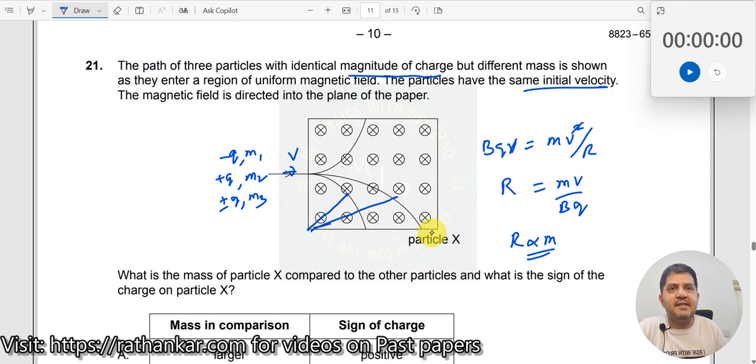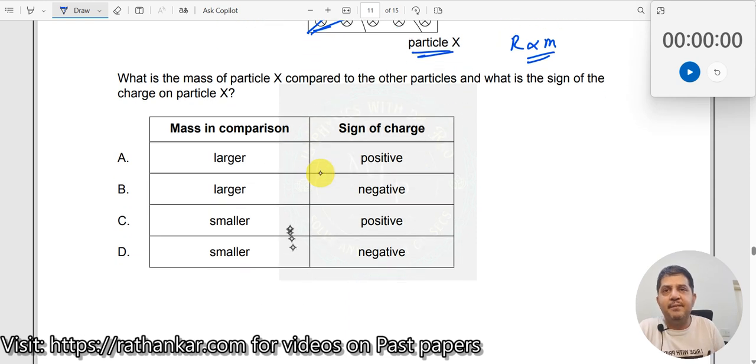Which one has a larger mass? So particle X, for example, is asking. So radius is much larger. So mass should also be larger. So therefore, these two are incorrect.